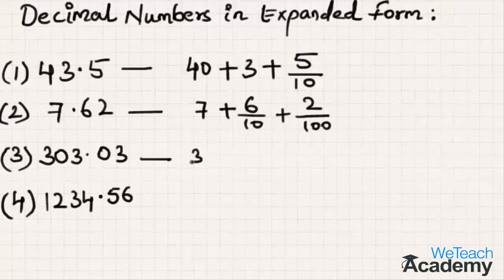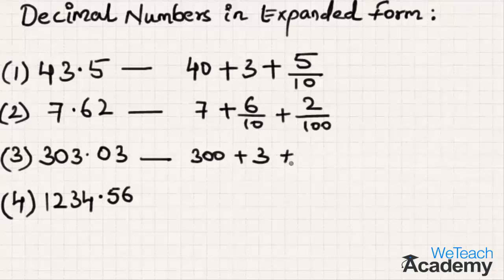Coming to the third example: 3 is in the hundreds place, so 3 into 100 gives 300. The tens place has 0, so we skip it. Units place has 3, giving 3. In the decimal part, the tenths place has 0 so we skip it, and 3 is in the hundredths place, written as 3 by 100. Hence this is the expanded form for 303.03.